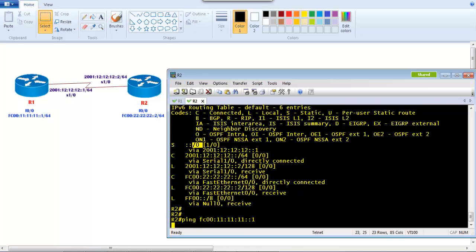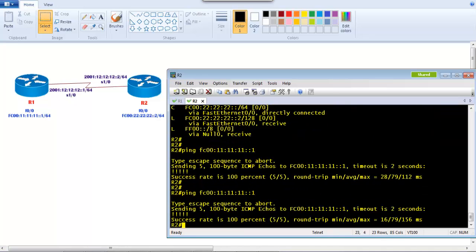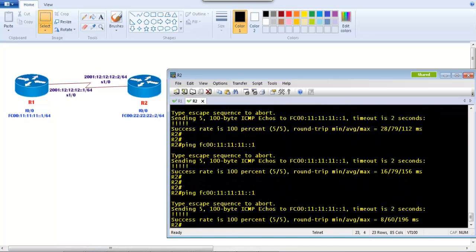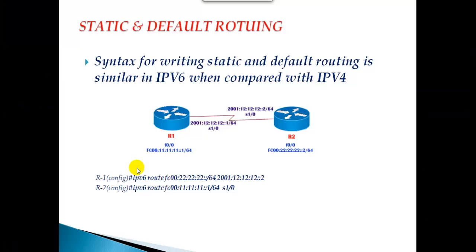Communication should still work through default routing — anything arriving at Router 2's interface will automatically be sent to Router 1, which then forwards it to its LAN interface. The configuration of default routing is exactly the same as static routing. When it comes to concepts, technology, and the way they work, it is exactly the same as what we learned in IPv4.